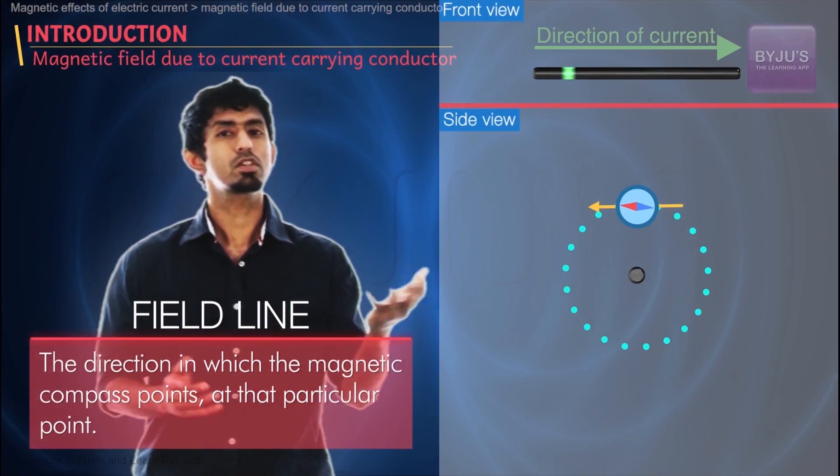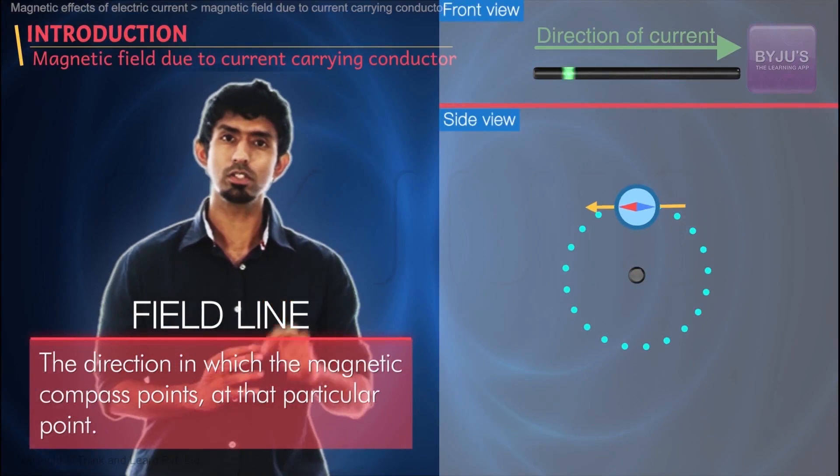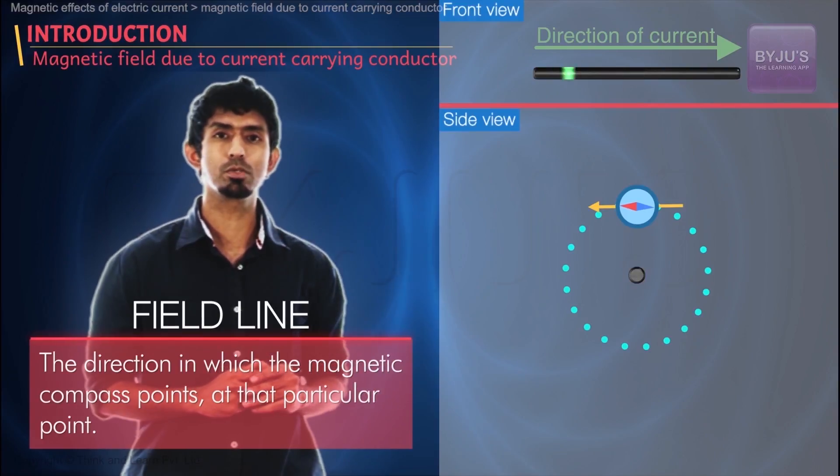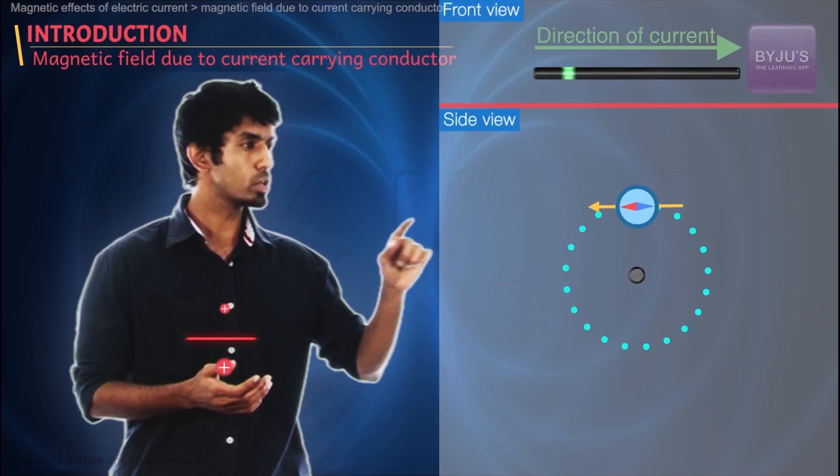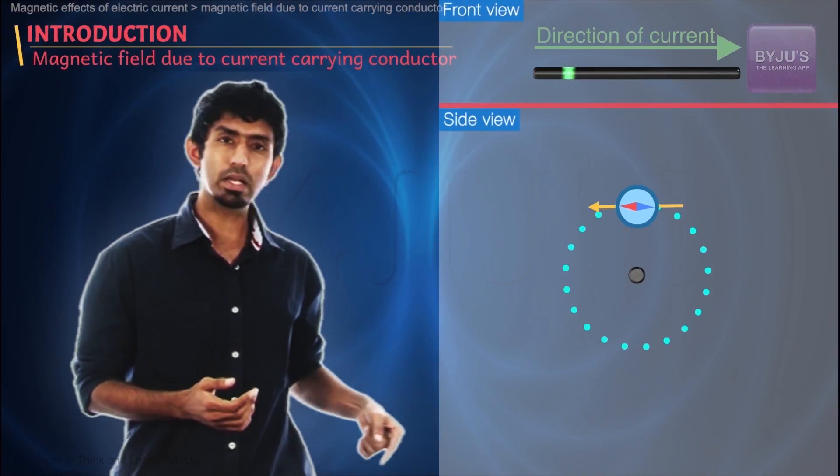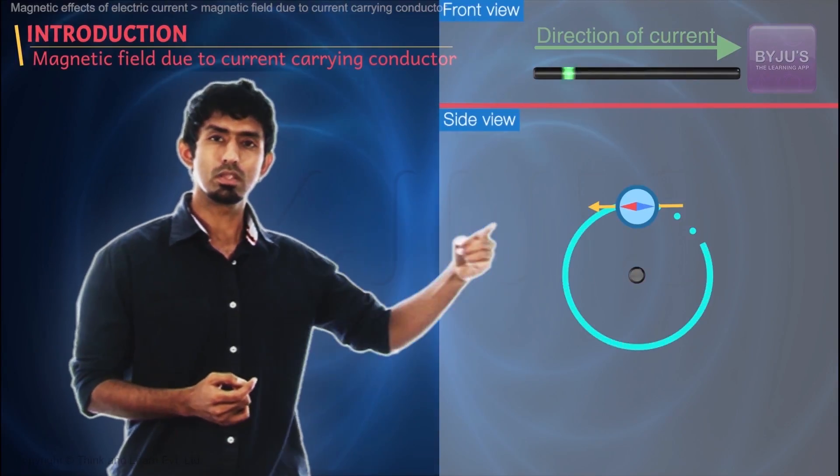How do we define a field line? The direction in which the magnetic compass points at that particular point. The north pole of the compass points at that particular point. So you keep doing this. He started connecting those points and he found a nice circle.